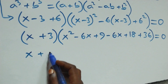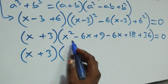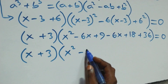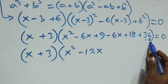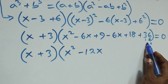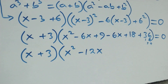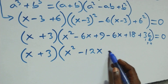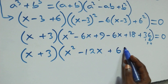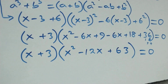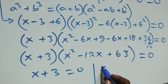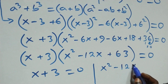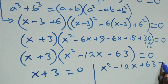This is the same as (x plus 3) into brackets, then open brackets: x squared minus 6x minus 6x gives minus 12x, then 36 plus 18 gives 54, plus 9 gives 63 — so plus 63, close brackets, equals to 0.